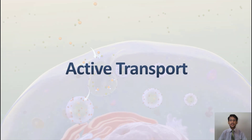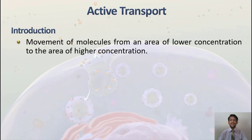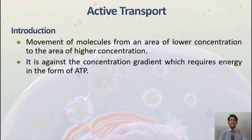Active transport is a movement of molecules from an area of lower concentration to an area of higher concentration — that is, against the concentration gradient — which requires energy in the form of ATP. ATP is an abbreviation of Adenosine Triphosphate, which is an energy-rich molecule.